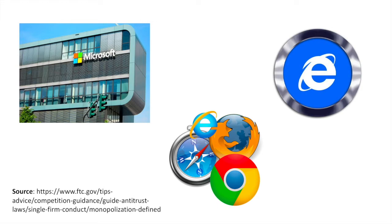Microsoft also granted free licenses or rebates to use its software, which discouraged other software developers from promoting a non-Microsoft browser or developing other software based on that browser. These actions hampered efforts by computer makers to use or promote competing browsers and discouraged the development of add-on software compatible with non-Microsoft browsers. The court found that although Microsoft did not tie up all ways of competing, its actions did prevent rivals from using the lowest cost means of taking market share away from Microsoft.